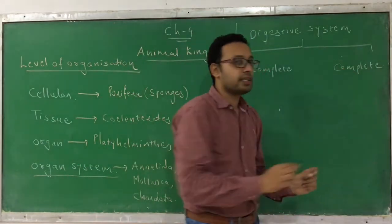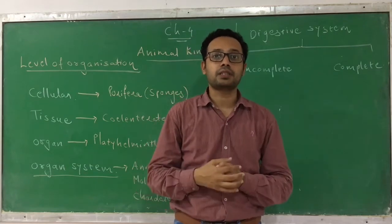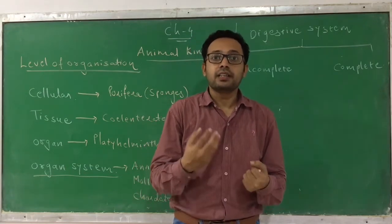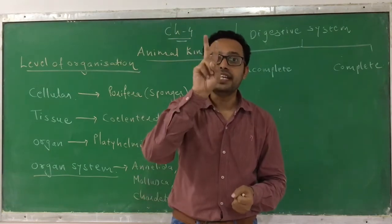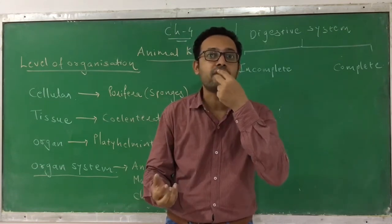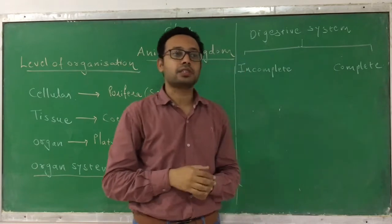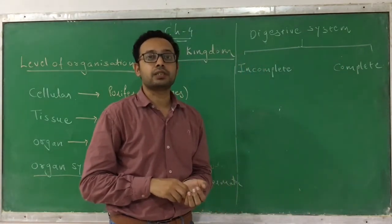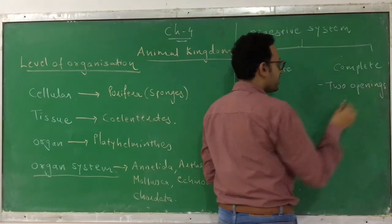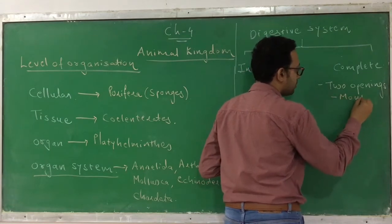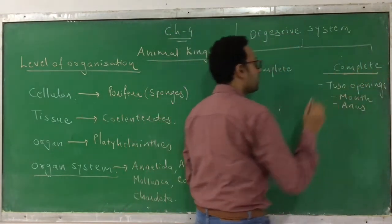I will first explain the complete digestive system because it is easier to understand, and then the incomplete. Like human beings have a complete digestive system — what do we mean by complete digestive system? They have two openings: the first is a mouth through which they take food, and the second is the anus through which defecation occurs. Those animals which have two openings in the digestive system — their digestive system is called the complete digestive system.